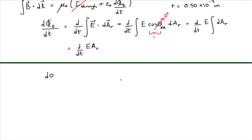Since we want the Amperian loop to be located at the point where we want to know the magnetic field, the area does not change with respect to time because the radius is just a constant 0.50 centimeters. So the time rate of change of the electric flux is equal to the area of our Amperian loop times the time derivative of the electric field.